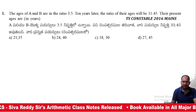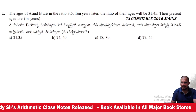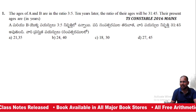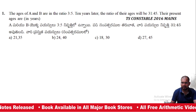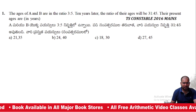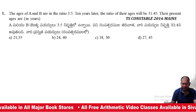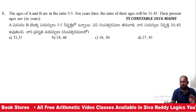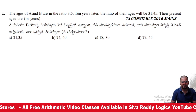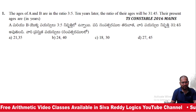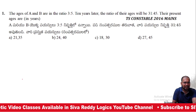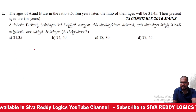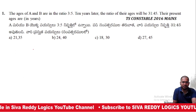The ages of A and B are in the ratio 3 is to 5. Ten years later, the ratio of their ages will be 31 is to 45. The present ages of A and B are in ratio 3 is to 5. If you add 10 years, it will become 31 is to 45.